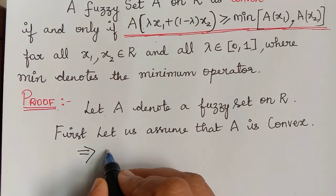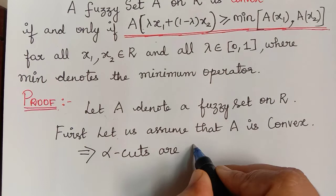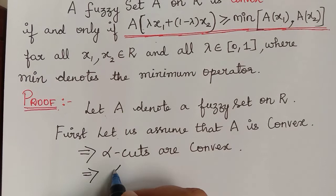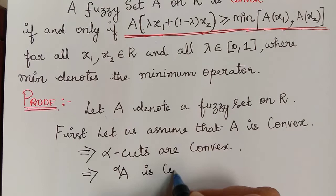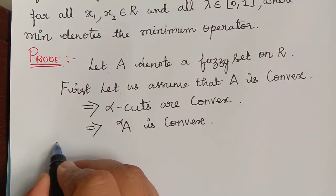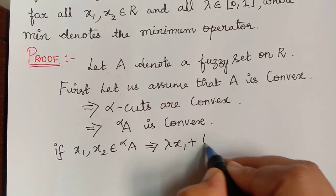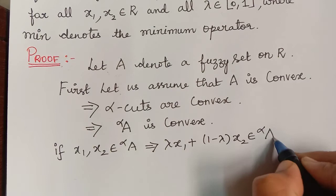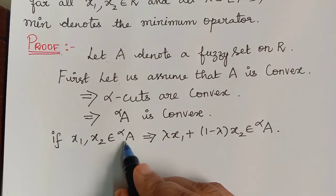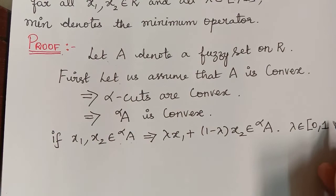Since we have assumed A to be convex, it implies that the alpha cuts of this set are convex. This means that if x1 comma x2 is an element of the alpha cut set, it implies that lambda x1 plus 1 minus lambda x2 will also be an element of the alpha cut set — this is by the definition of convex set — where x1 and x2 belong to the alpha cut and lambda is a scalar in closed interval 0 comma 1.